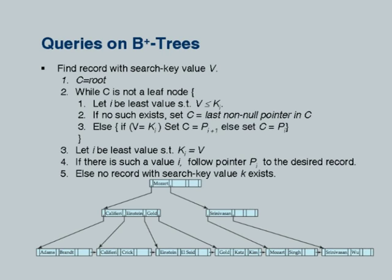We are going to see how to do insertions and deletions. We just saw how to do searches, which is very efficient. What about searching for a range of values in a tree? Let us take this example tree. The pseudocode says: start with the root and until you reach a leaf, find the pointer to follow down. Once I hit a leaf, I will see if the value I am searching for is in the leaf. If so, I follow the pointer and I am done.